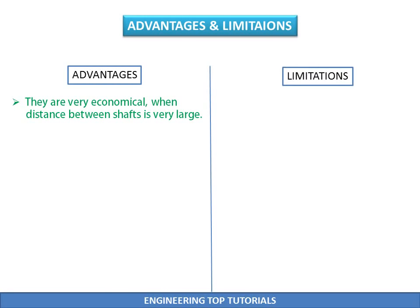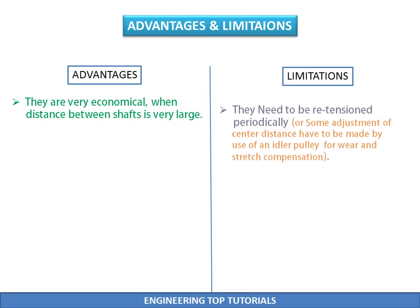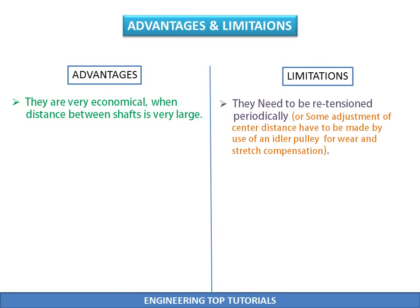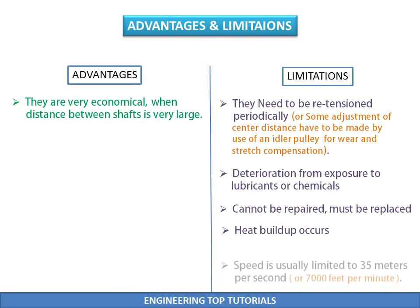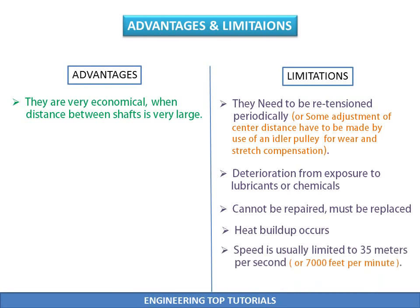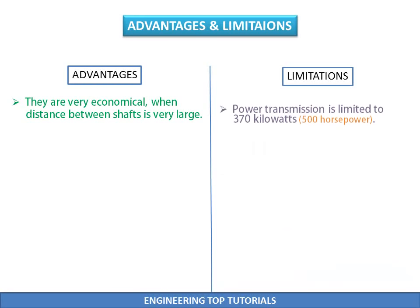Limitations of belt drives: They need to be re-tensioned periodically, or some adjustment of center distance must be made using an idler pulley for wear and stretch compensation. Belts are more prone to deterioration from exposure to lubricants or chemicals. The belts cannot be repaired — they must be replaced. Heat build-up occurs and speed is usually limited to 35 meters per second. Power transmission is also limited to up to 370 kilowatts.